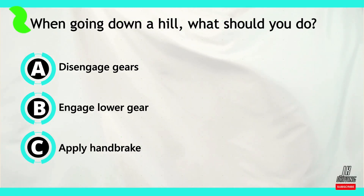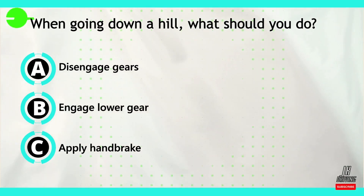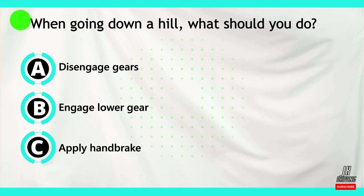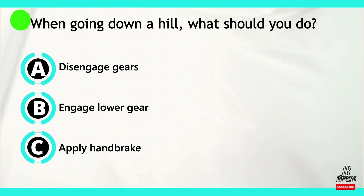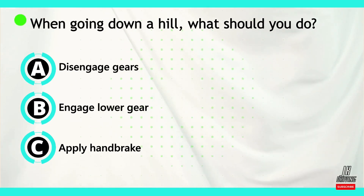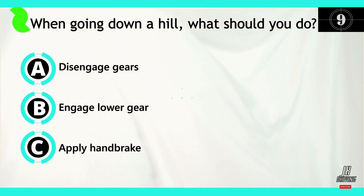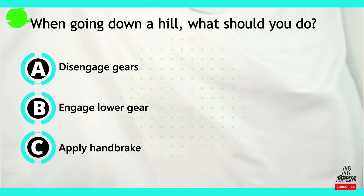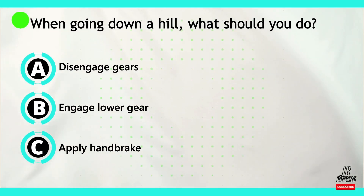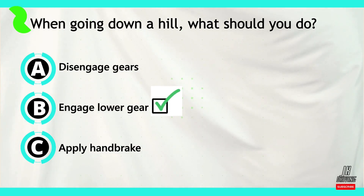Question number five: when going down a hill, what should you do? Option A: disengage gears. Option B: engage lower gear. Option C: apply handbrake. The correct answer is B — when going down a hill, engage lower gear.